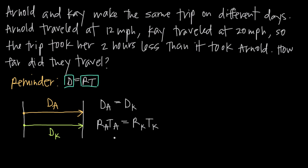The reason we wanted to get to this point is because the only information we've been given in this problem is about Arnold and Kay's rate and time — we haven't been given any information about their distance, and that's the unknown we need to find. So we wanted to get the equation in this form so we could start plugging in values. Arnold traveled at a rate of 12 miles an hour, so R sub A equals 12. Kay traveled at 20 miles per hour, so R sub K equals 20.